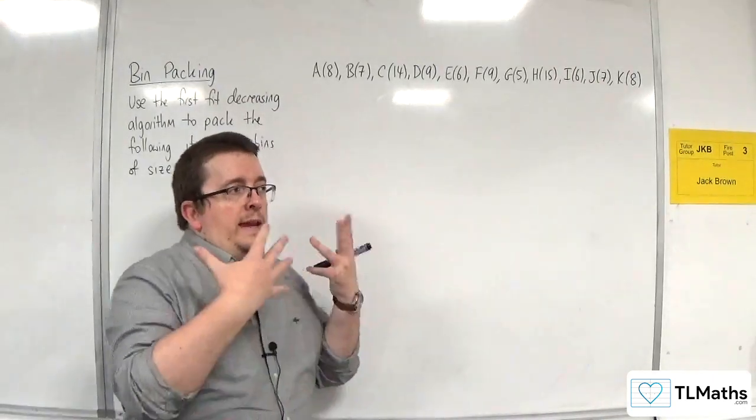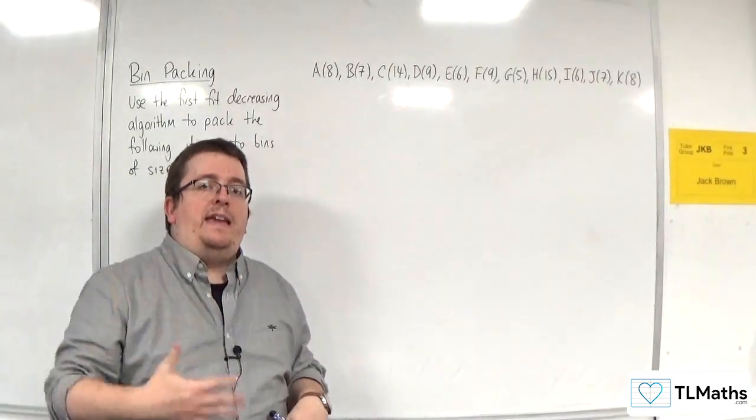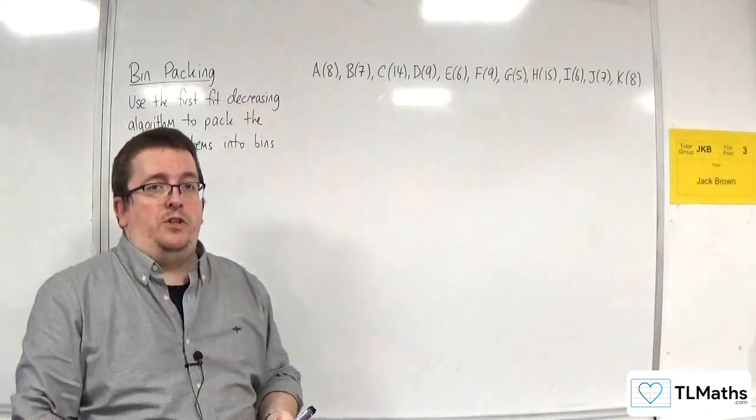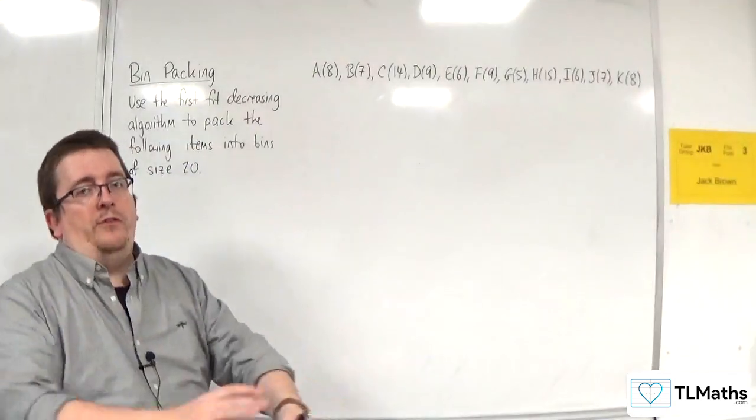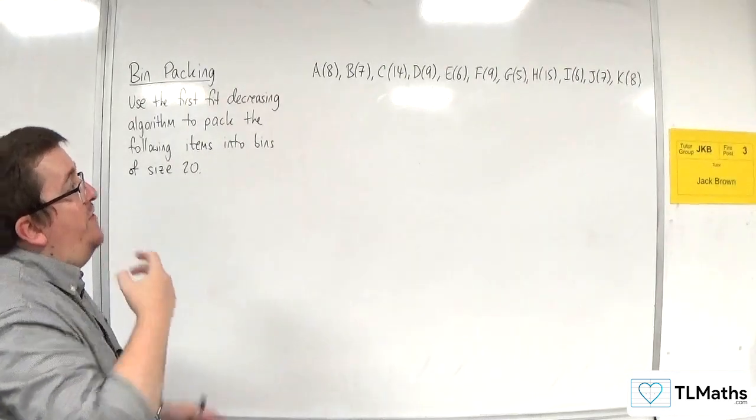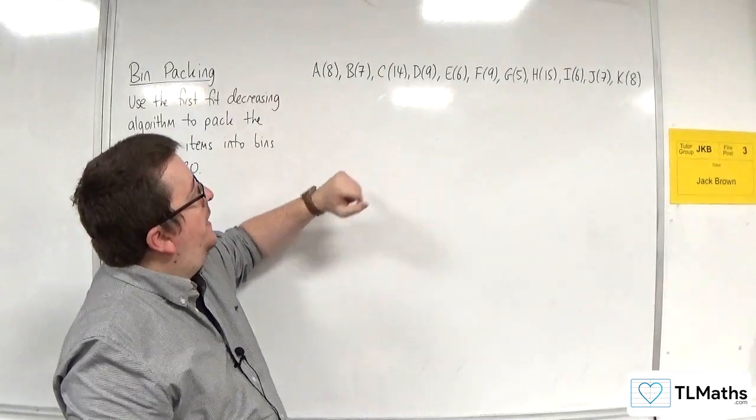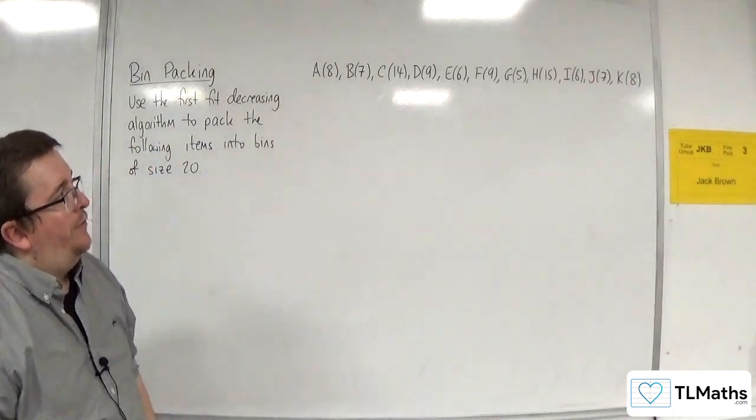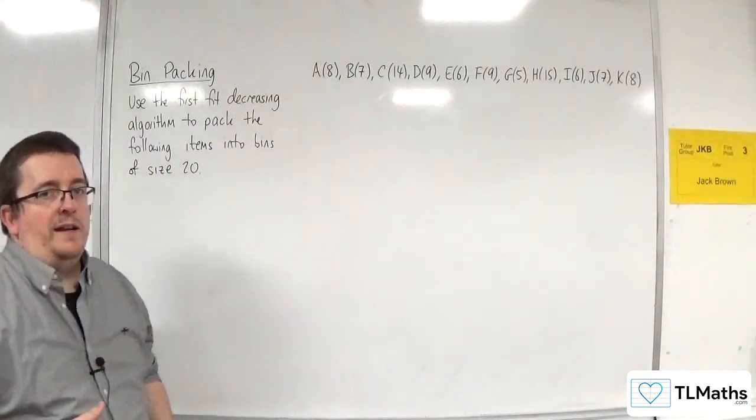Now, in an exam, what they could do is get you to, first of all, use a sorting algorithm to sort these into decreasing order. That could be a part A, and then you're going to use the first fit decreasing algorithm. Now, the only problem with that in this case is that we've got repetitions of 8s and 7s, and I can see a couple of 9s in there as well, a couple of 6s.